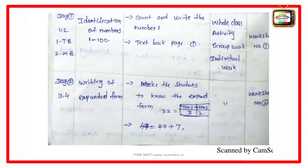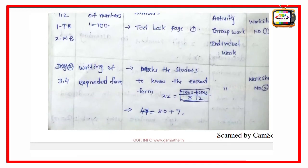Day 2, periods 3-4. Writing of expanded form. Make the students to know the expanded form: 32 equal to 3 tens, 2 ones, so 47 is 40 plus 7. That is expanded form and add them to know the students to know the expanded form.